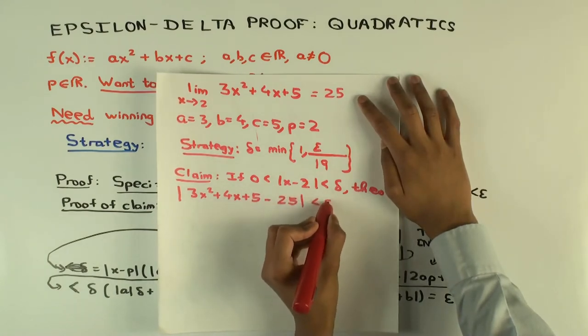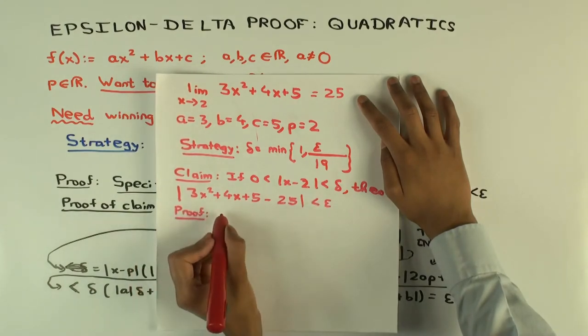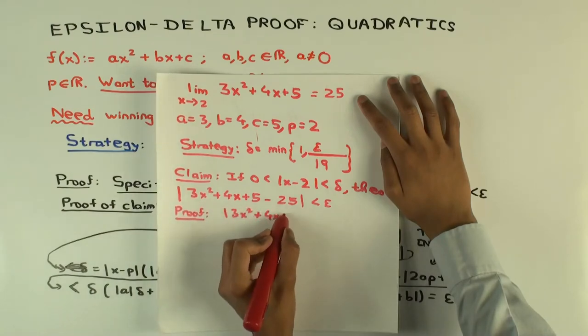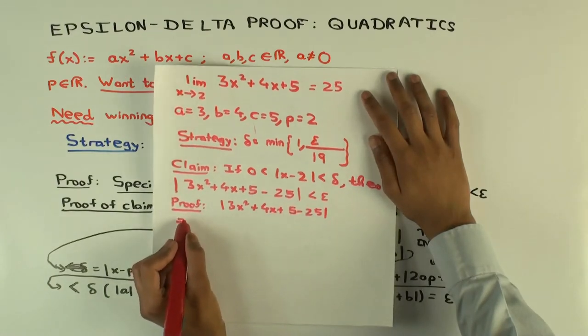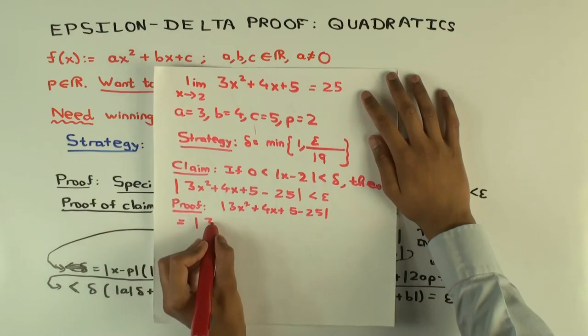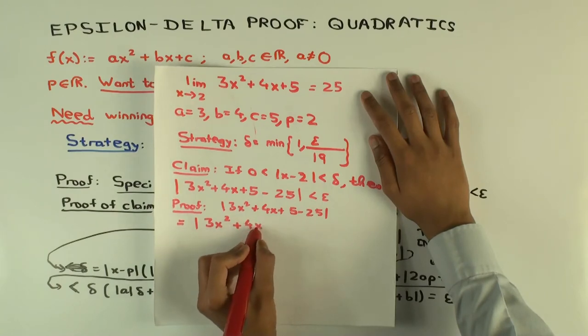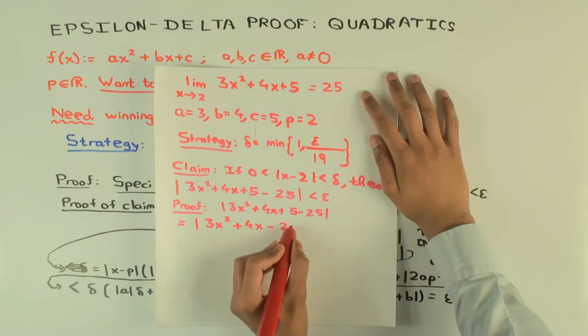Okay, so the proof. We start off with this thing: 3x squared plus 4x plus 5 minus 25, and the hope is we'll just keep simplifying this till we get less than epsilon. So what is this? This is 3x squared plus 4x minus 20.